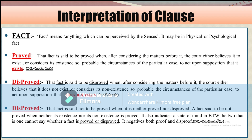Next is 'Not Proved.' A fact is said to be not proved when it is neither proved nor disproved — that is, when neither its existence nor its non-existence is proved. It indicates a state between the two, where one cannot say whether a fact is proved or disproved.